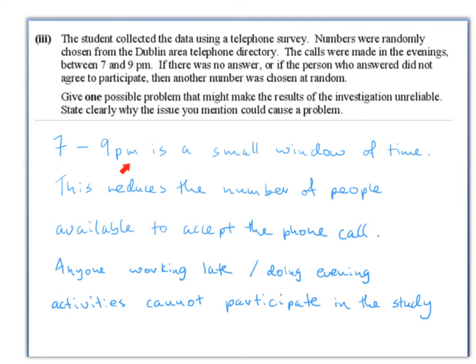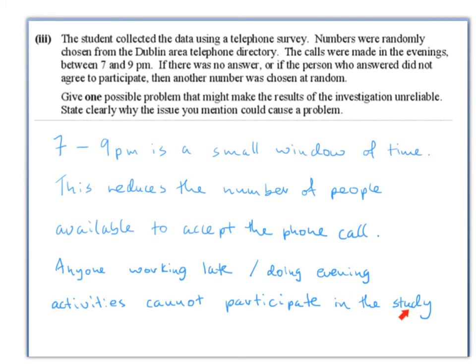The 7 to 9pm window is only two hours, which reduces the number of people available to accept the phone call. Anyone working late or doing evening activities cannot participate in the study, making the sample unrepresentative.